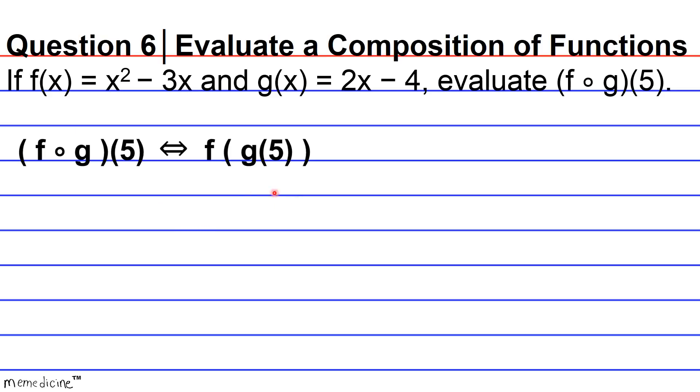So the first thing we're going to do is evaluate g(5). g(5) = 2(5) - 4, because we substituted 5 for x. 2 times 5 is 10 minus 4, which equals 6. So g(5) = 6.